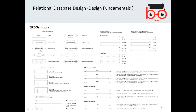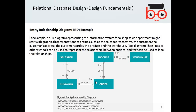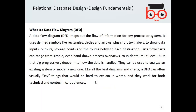Certain symbols are used in entity relationship diagrams: an oval, a square, a rectangle, and a triangle representing a decision. Using these symbols, relationships such as one-to-one and one-to-many can be defined. Everything should be represented through the entity relationship diagrams that you create for your database design.